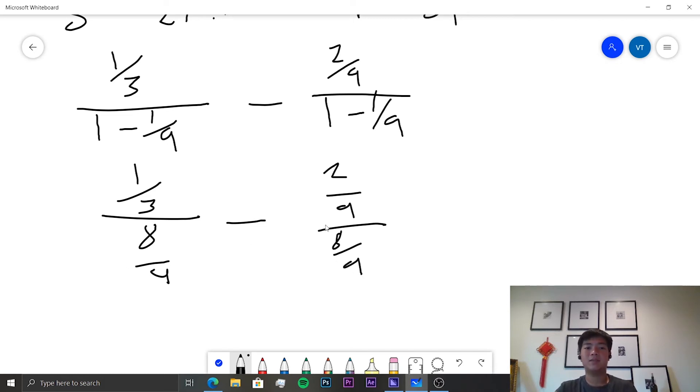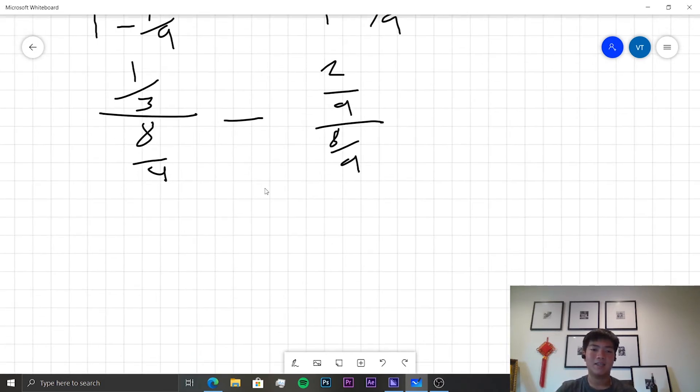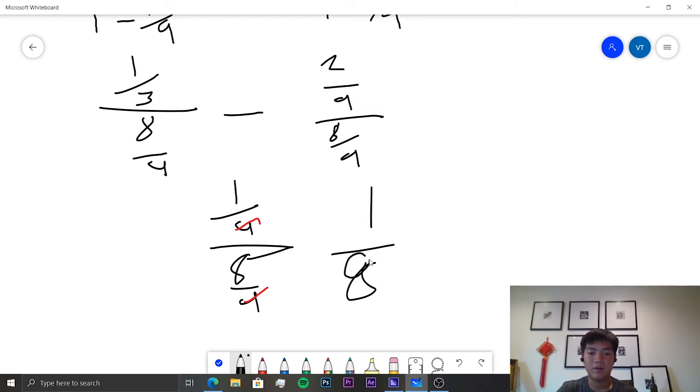Let's evaluate this. This is (1/3)/(8/9) minus (2/9)/(8/9). And we can just subtract these two directly. 1/3 - 2/9 gives us (1/9)/(8/9) is our answer. Since both the top and the bottom are being divided by 9, we can simply cancel those out, giving us the final result of 1/8. And so that should be our answer.